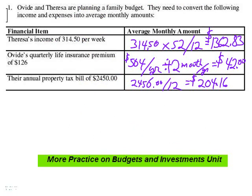Here are examples from our budgets and investment notes: how to plan a family budget, how to convert weekly amounts to monthly amounts — multiply by 52 and divide by 12. Quarterly amounts can also be converted to monthly amounts, and annual amounts can just be divided by 12.